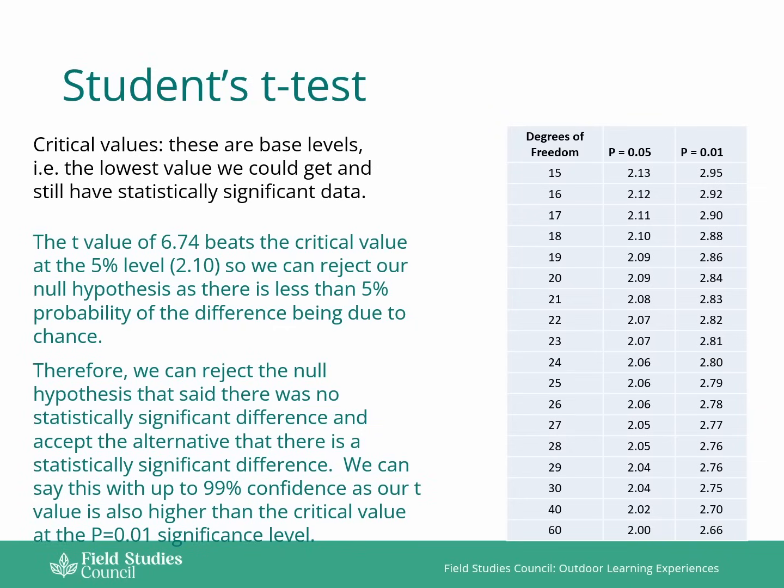So even though we've already rejected the null hypothesis, we can now say that there is an even higher confidence in that value because there is less than 1% probability that the difference is due to chance. So we can accept our alternative hypothesis saying that there is a statistically significant difference.